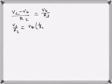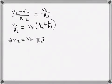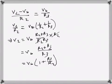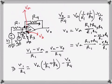Rearranging, we get v2/r2 = vb*(1 + r2/r3), which gives vb = v2 * r3/(r2 + r3), or equivalently vb = v2 / (1 + r2/r3). Now, since va is equal to vb by the virtual short condition of the op-amp, we can substitute.